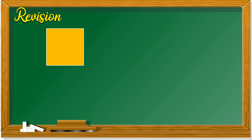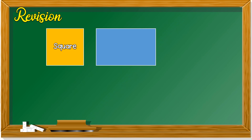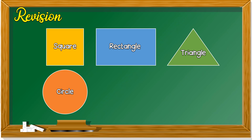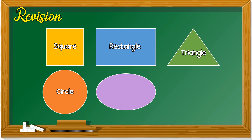This is a square. How about this one? It's a rectangle. This is a triangle. Circle. The shape like an egg is called an oval.